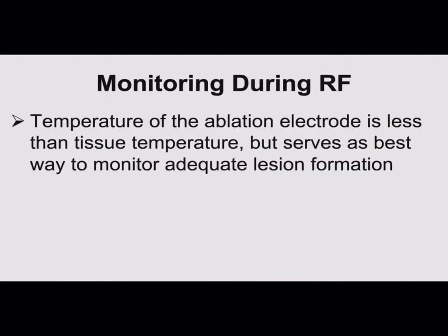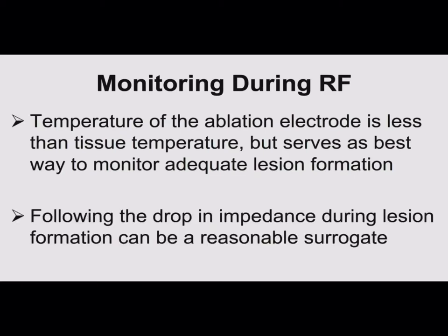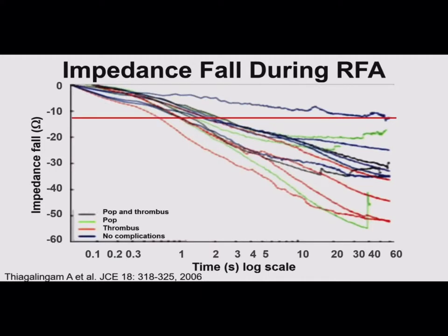The temperature of the ablation electrode is less than the tissue temperature, but serves as a good way to monitor lesion formation for non-irrigated ablation. The other thing we use a lot is following the drop in impedance during lesion formation, which is a good surrogate. Looking at impedance drops: if you keep the impedance drop generally under 10 to 12 ohms, you're not going to get a steam pop. It's when you're getting down to 18 to 20 that you have risk. A lot of people don't pay attention to impedance, but I think it's very useful.